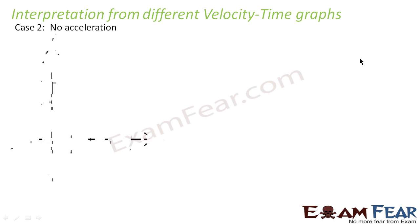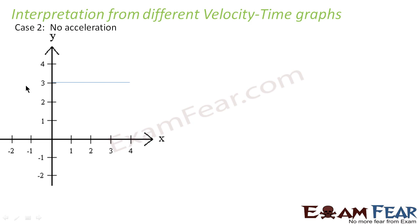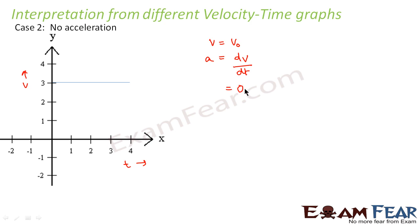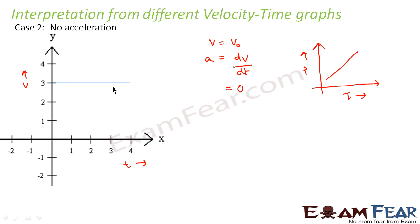Let us consider the second scenario where there is no acceleration. This is how the velocity-time graph looks — the value of velocity remains the same with increasing time. The time keeps increasing from 1, 2, 3, 4 but the value of velocity remains 3 even for the increasing time. That means if velocity remains constant, acceleration — which is nothing but change in velocity with time — will definitely become equal to zero. So the position-time graph in this case would be a straight line, meaning the change in position is uniform with respect to time.